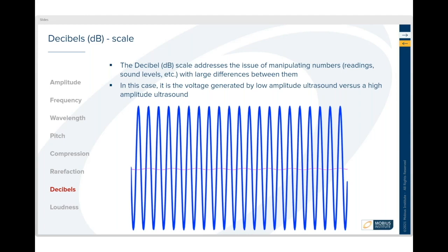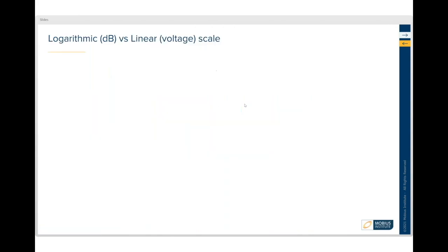Well, the problem is when we look at the kinds of sounds that we're dealing with, the ultrasound, we're dealing with very low amplitude ultrasound in the presence of very high amplitude ultrasound. And if we just looked at the actual voltage that comes from our sensor, there's a great wide range. We'll be dealing with small numbers and really big numbers. So to simplify it, and for other reasons, we use the dB scale.